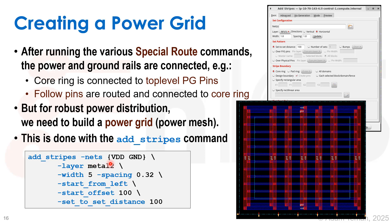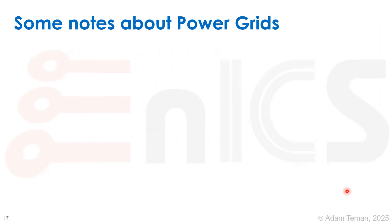You do add_stripes -nets VDD GND -layer metal2, decide on the width and spacing of the stripes, where you want to start from, and the distance between them. In practice, you'll usually have a build-up of many different nets going up - it could be on every layer, or just on the top layers with a couple at something like M2 and M3 - but we're going to have some sort of power mesh built all over our design.